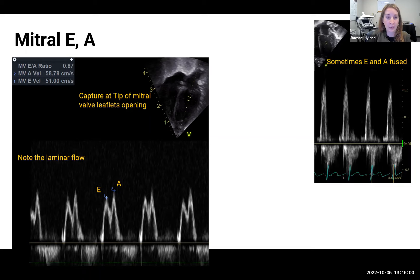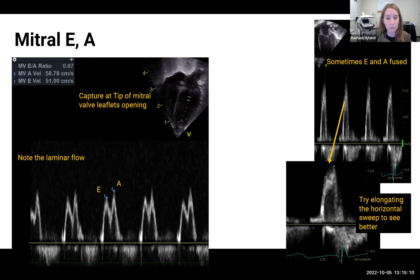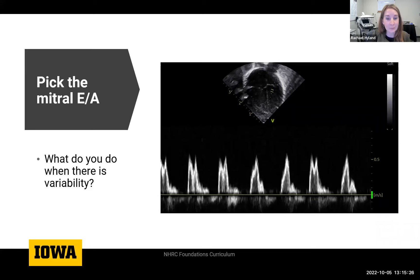If the mitral E to A looks fused, troubleshoot your image first. Make sure you're at the exact right point at the tip of the mitral valve leaflets. You can come back later when the baby is more calm. Another thing you can try is spreading out the horizontal sweep as you're measuring to spread out the image — you can look for the darker flow pattern below to help estimate where the value should be.